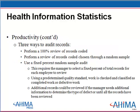There are three ways to audit records. First, the manager could perform a review of 100% of all work performed. Second, the manager could perform a review of work chosen through a random audit. Third, the manager could use a fixed percent random sample audit — that last suggestion is the easiest. This method requires selecting a fixed percent of an employee's total work for review against a predetermined quality standard, classifying work as defective or not. Additional records can be reviewed if needed to dig further into the type or extent of defects.